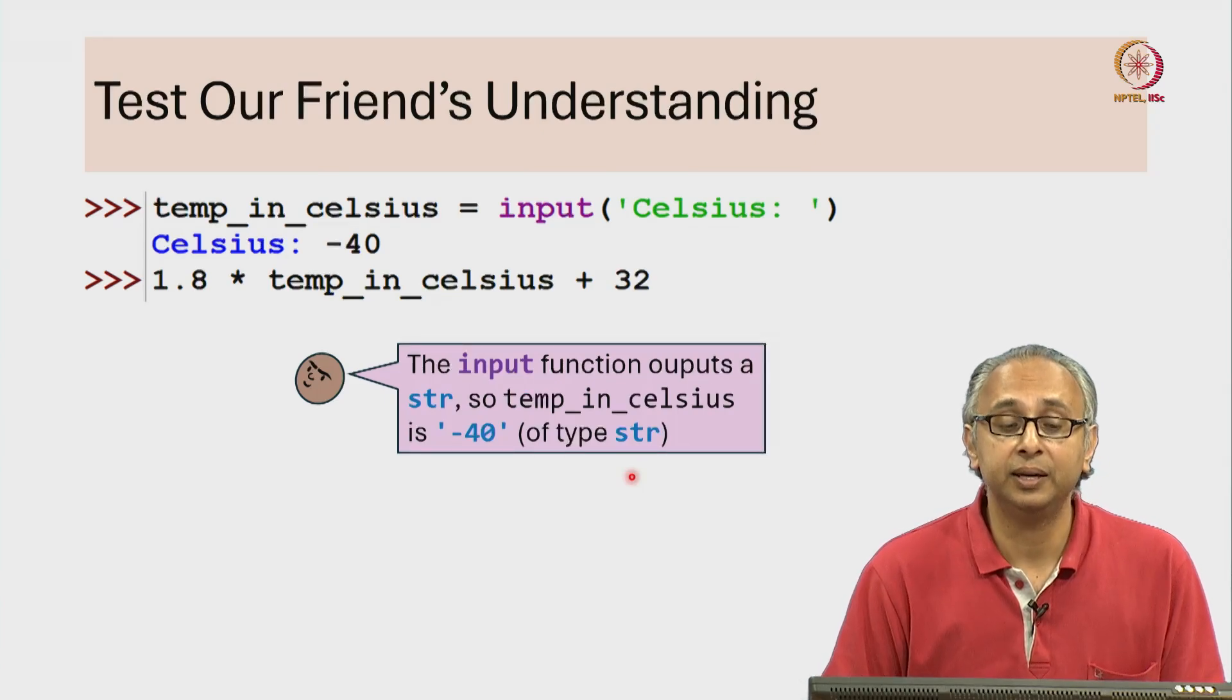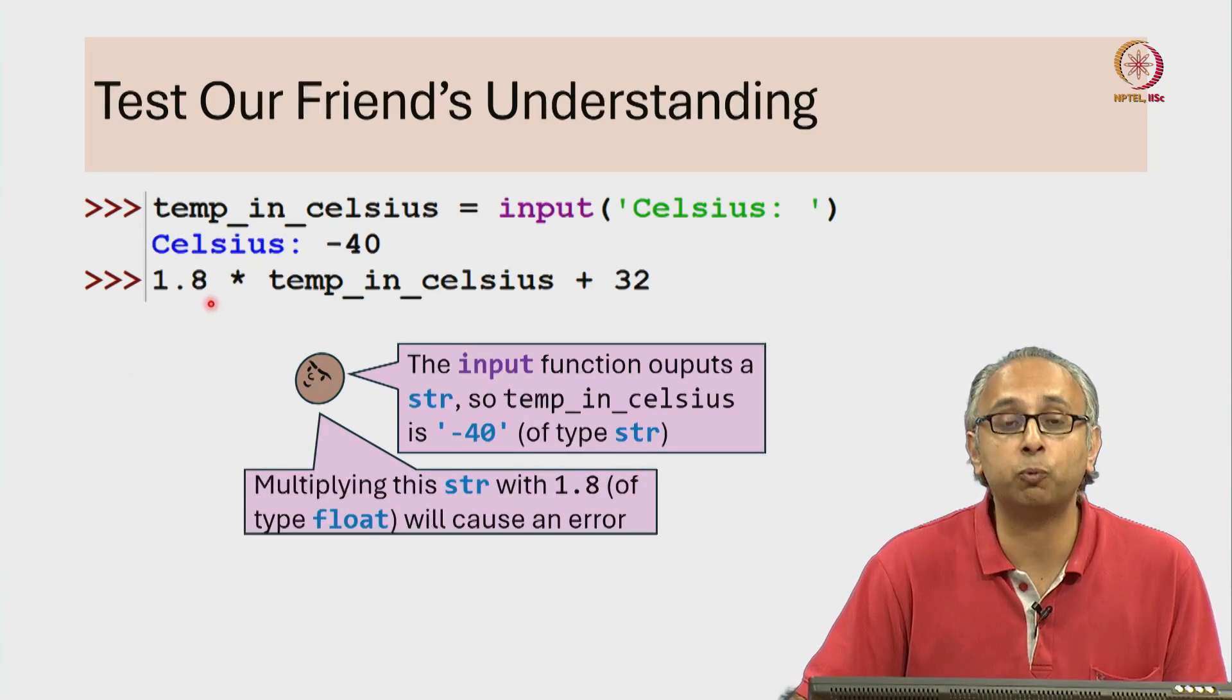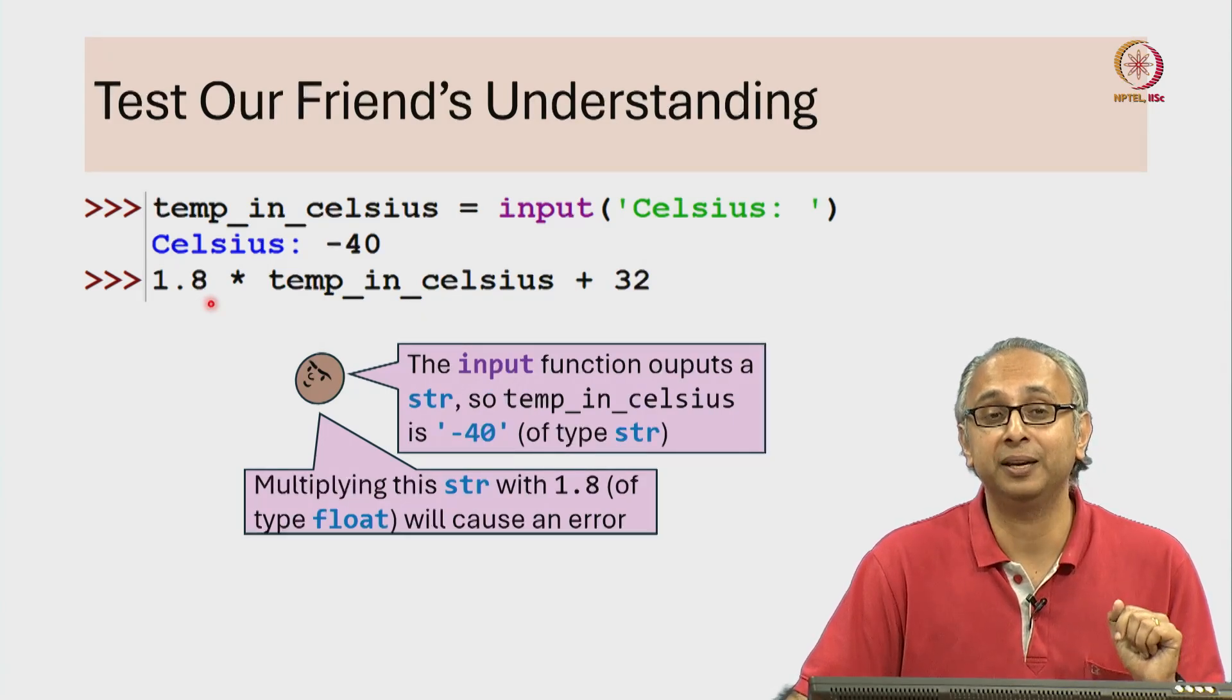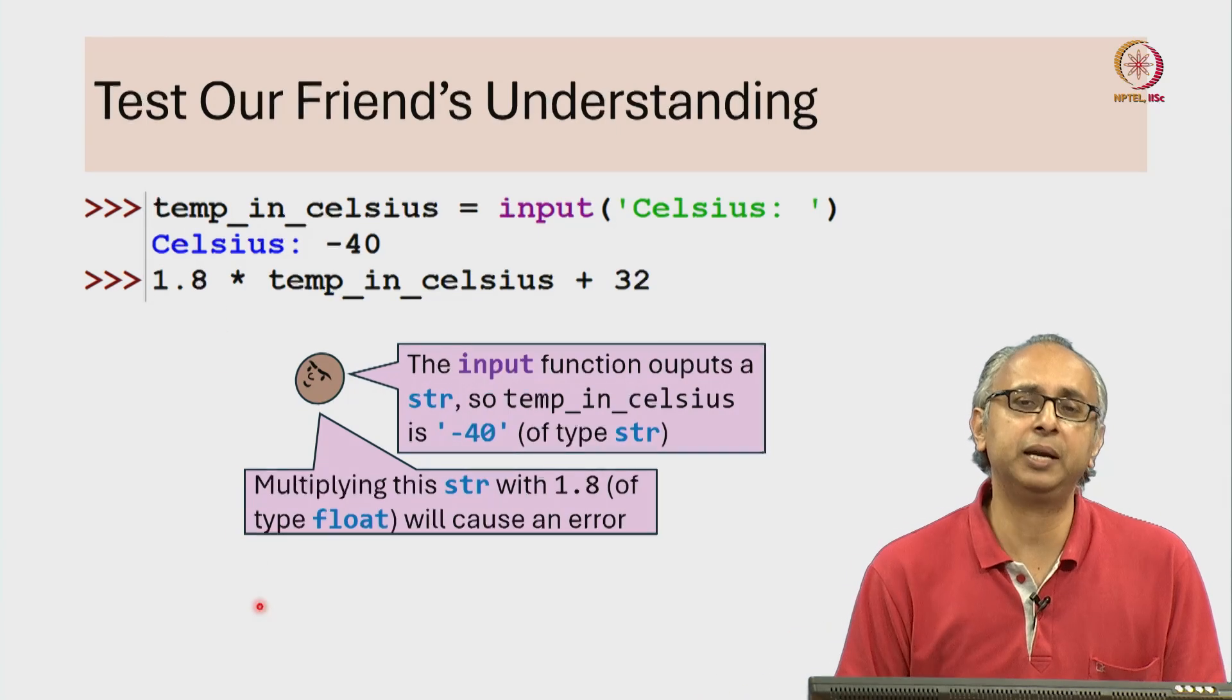Secondly, if we take that string object and multiply it with 1.8 which is a float, that will be an error. So, I would like you to pause and think about this. Let us ask, has our friend understood this correctly?